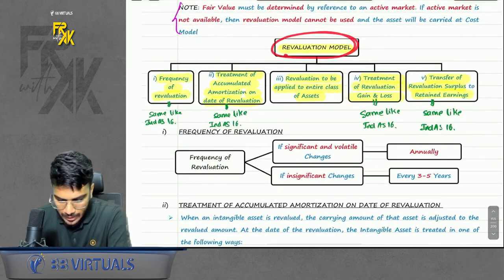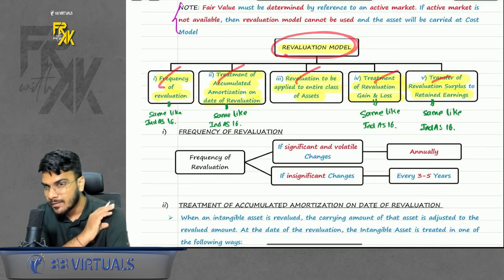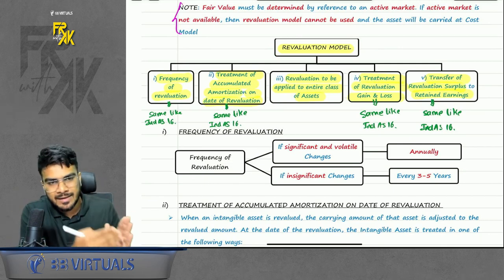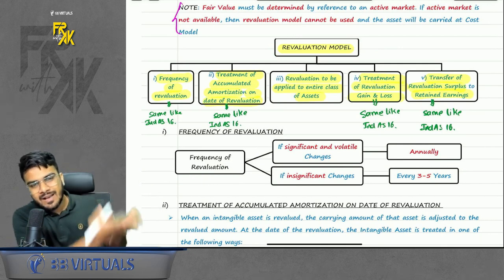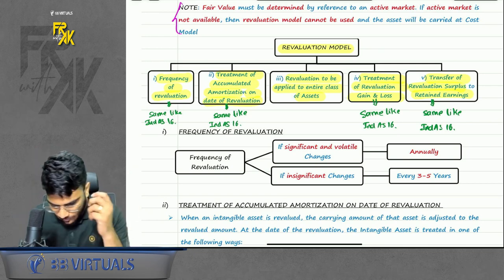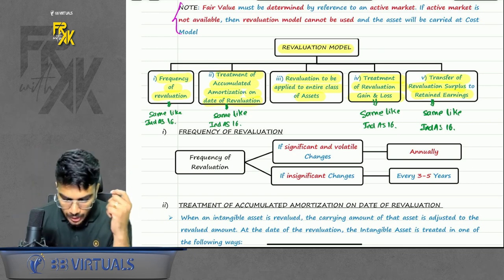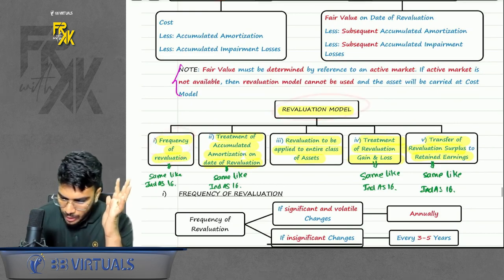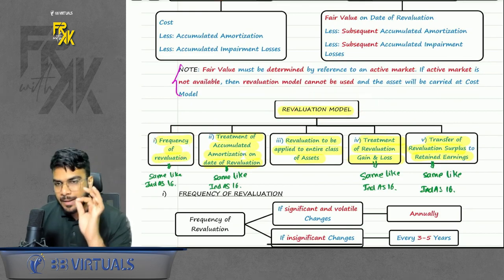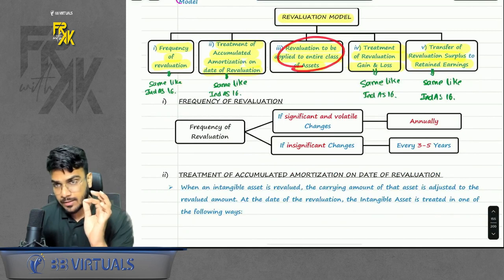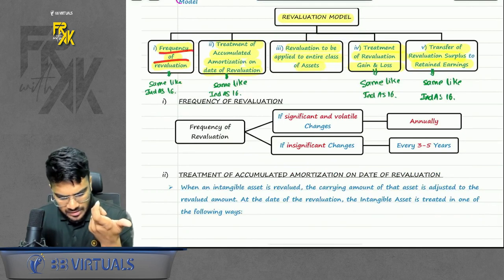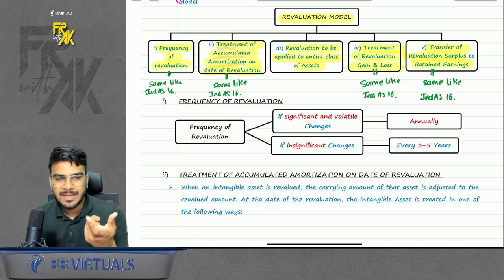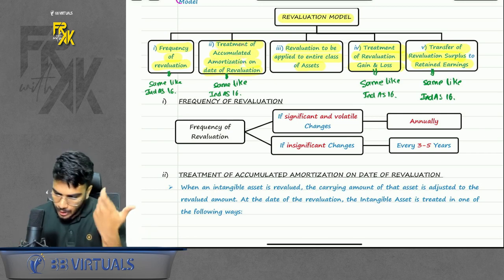If you are following the revaluation model, there are again 5 points — everything is the same as Ind AS 16, so those won't be revised here. The treatment of accumulated amortization has two methods: we can either eliminate or not eliminate. The revaluation is to be applied to the entire class of asset — this point was there in Ind AS 16 also.